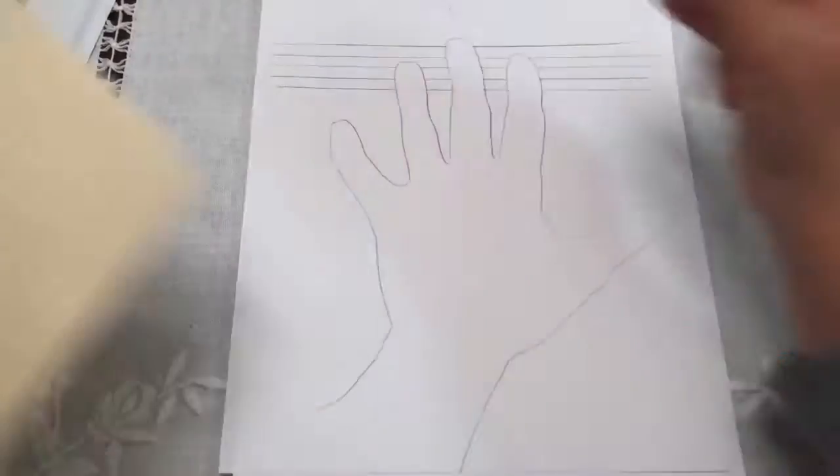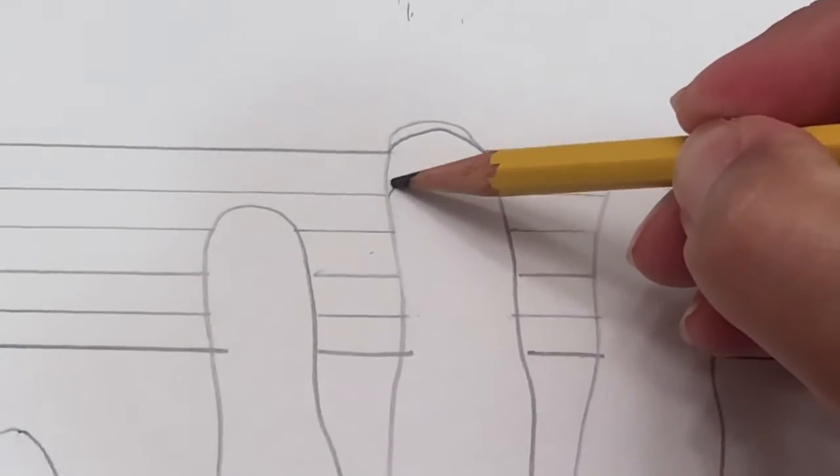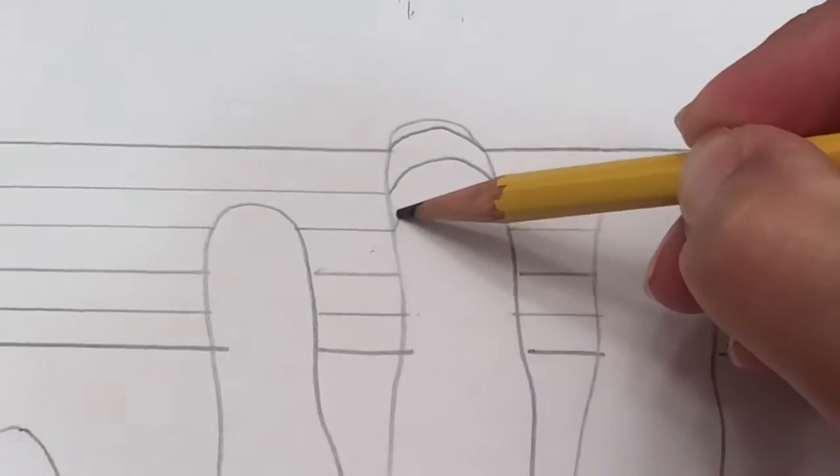Then you're going to take a straight edge and draw lines across the paper, skipping over the hand.